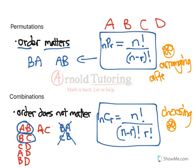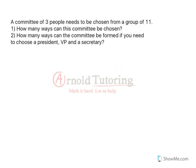Let's do a quick example. A committee of three people needs to be chosen from a group of 11. How many ways can this committee be chosen? Super simple — we're just choosing three people from a group of 11, so it's 11C3. We're not arranging them after that. So that is 11 factorial over (11 minus 3) factorial times 3 factorial.